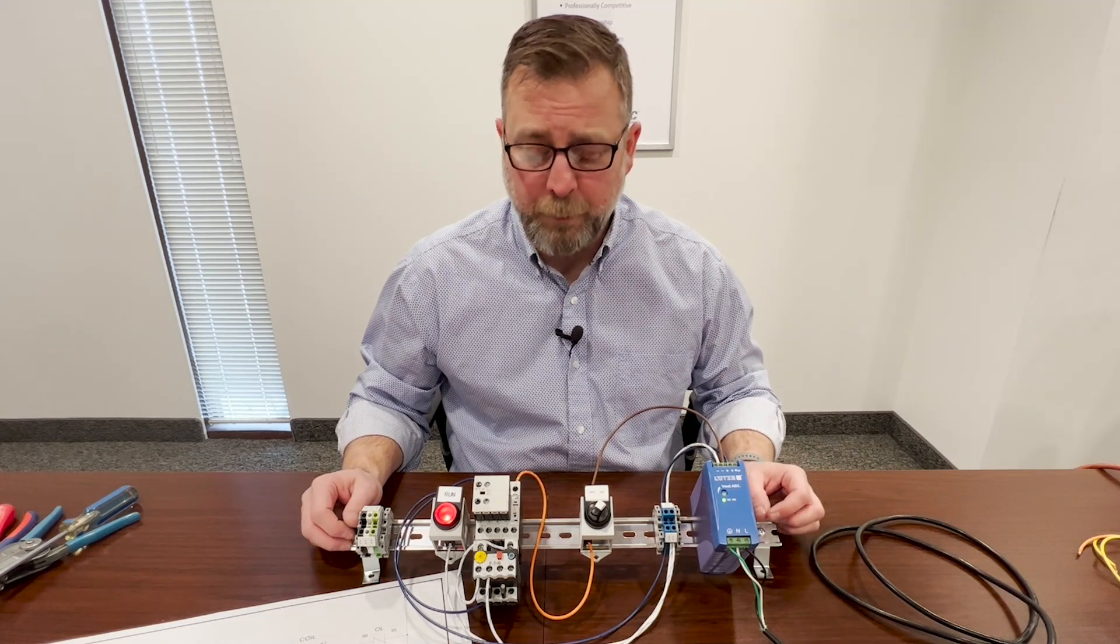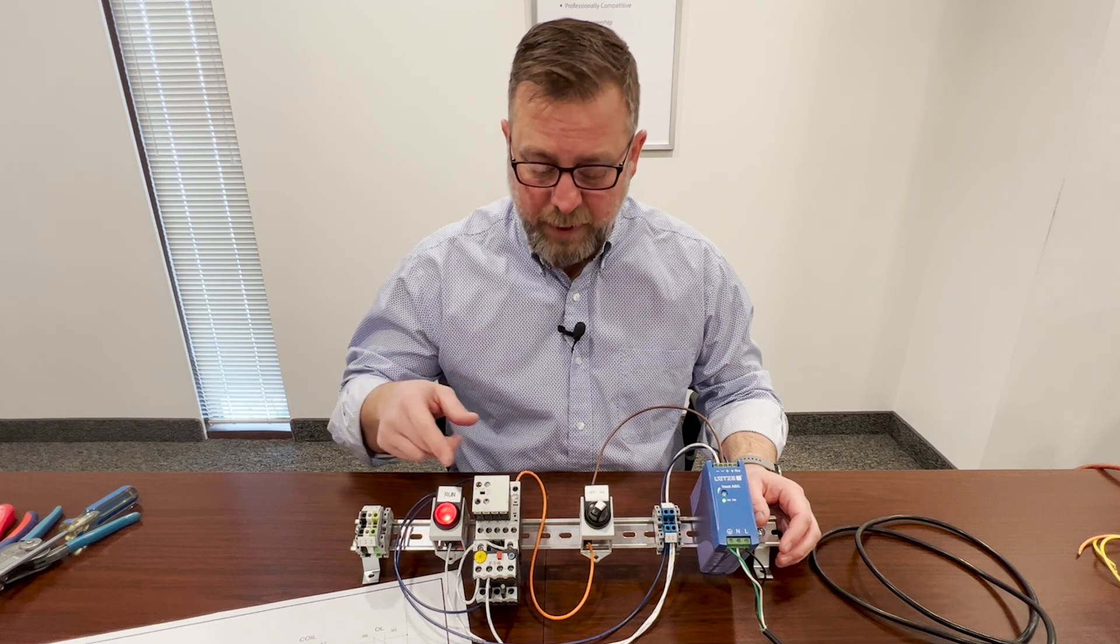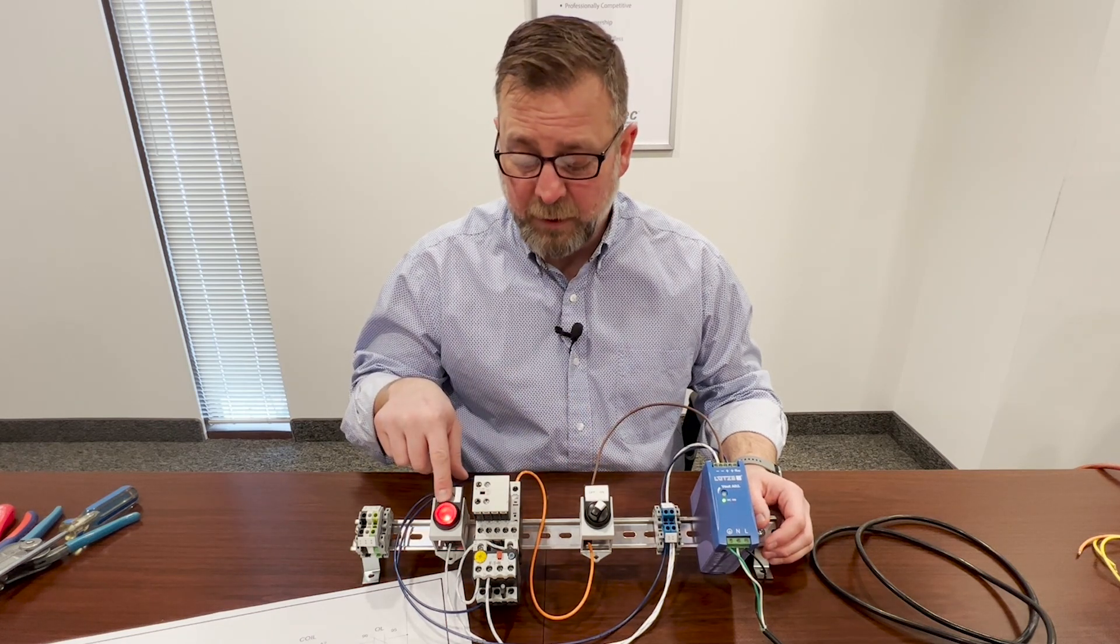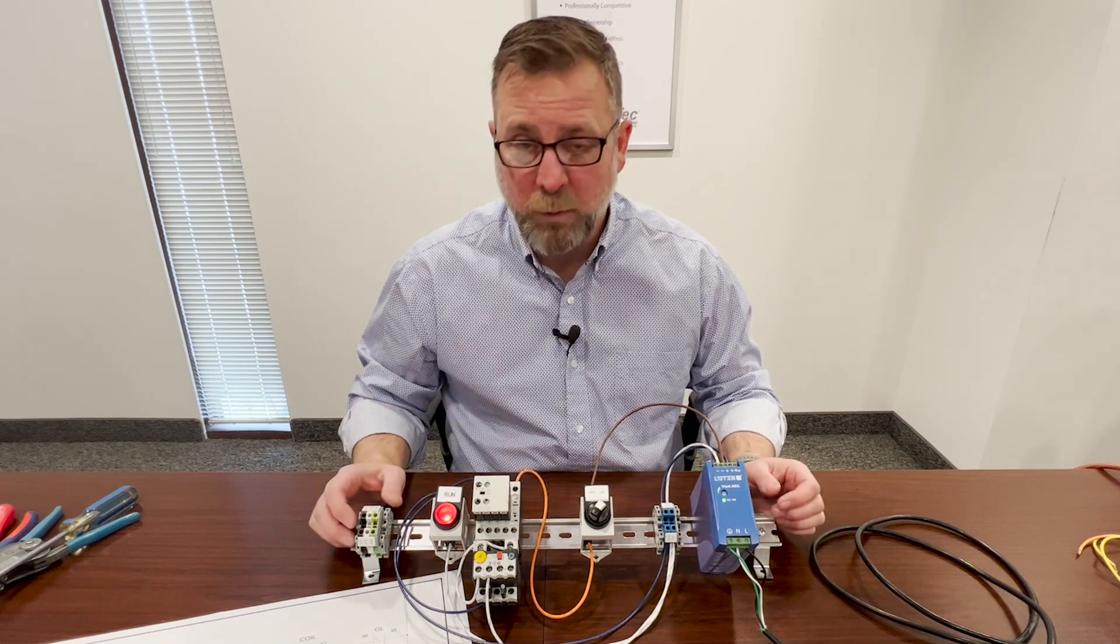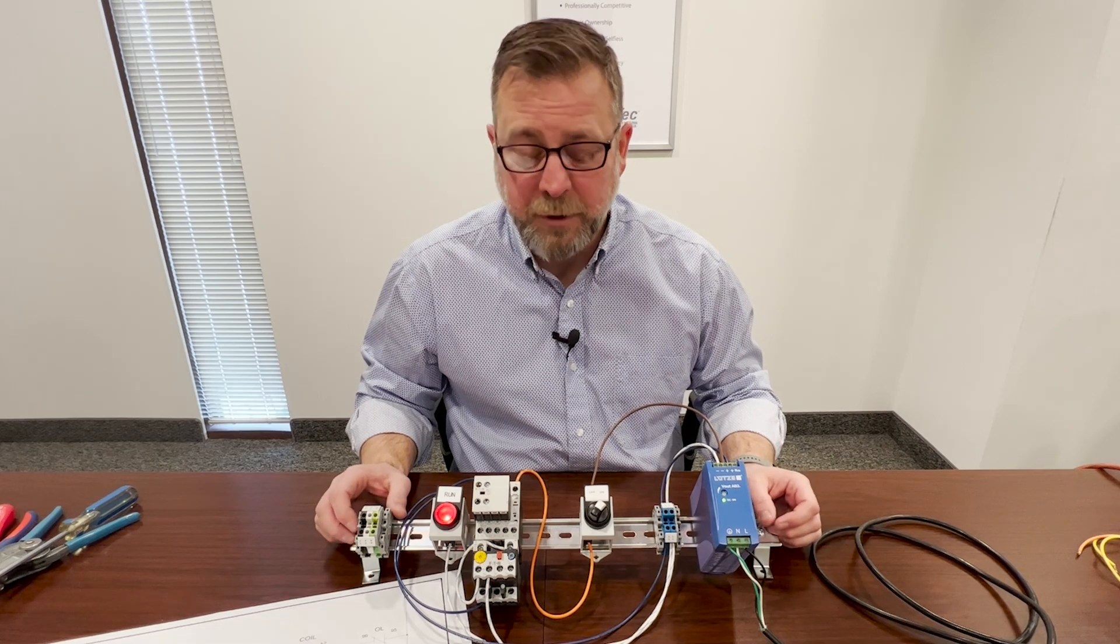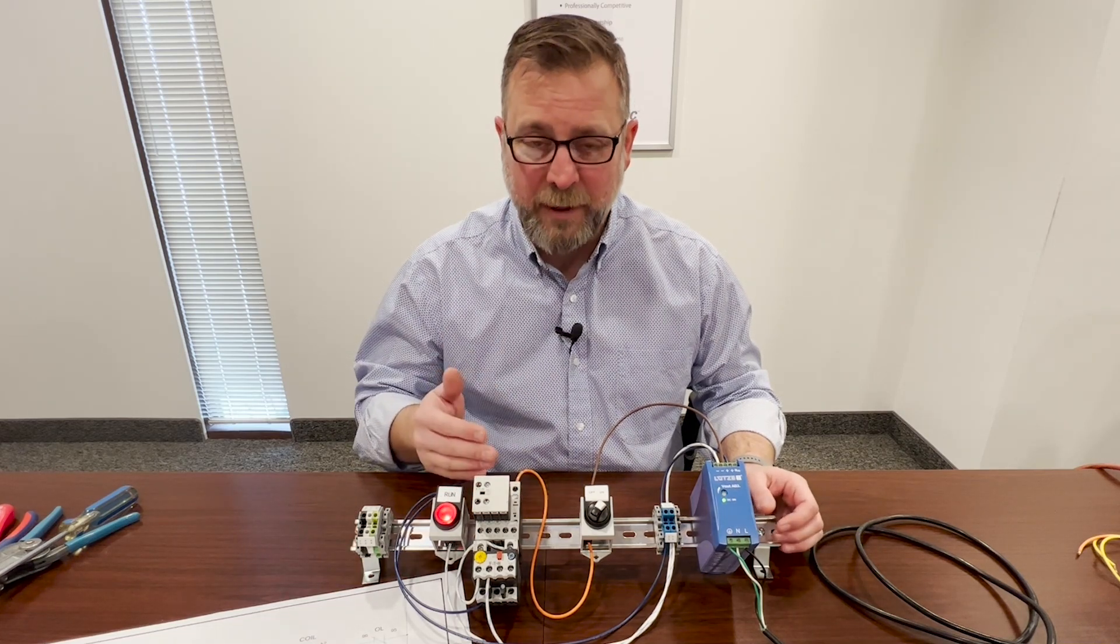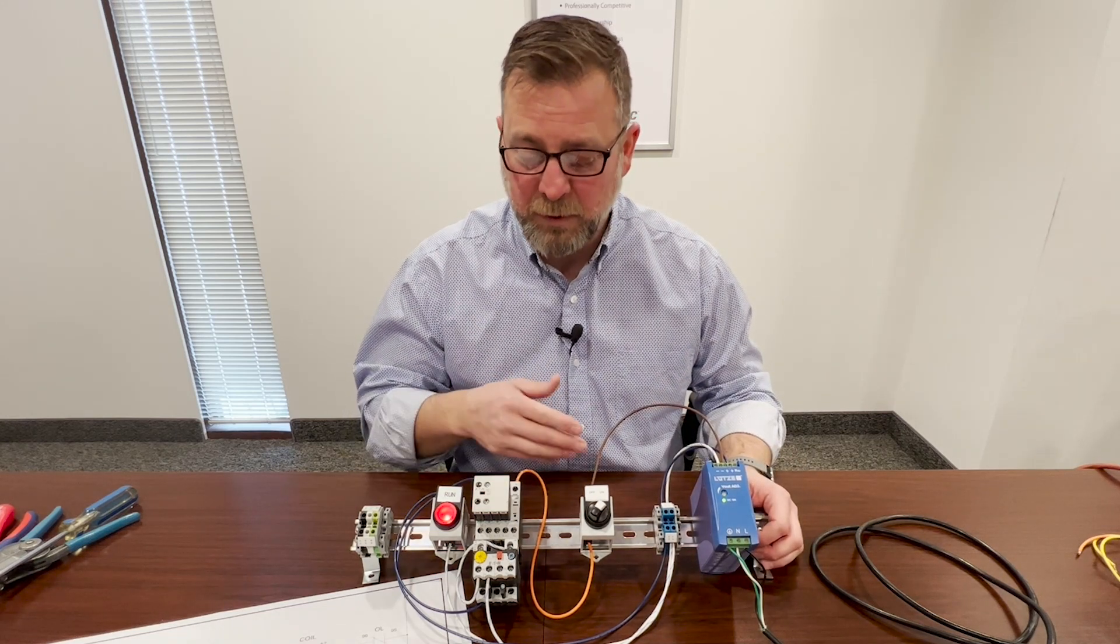This is the problem with two-wire control. If I lose power, when the power comes back on because the switch is on, the light bulb is going to turn on. The motor starter is going to turn on automatically. So you have to make sure that two-wire control is actually right for your application. You might not want this starter to turn on right away when power comes back on. You might want to have to tell it to start as opposed to it automatically happening.